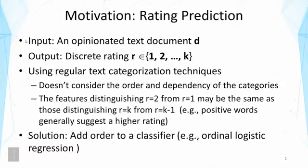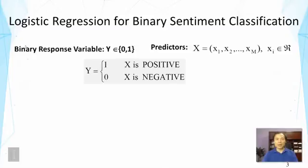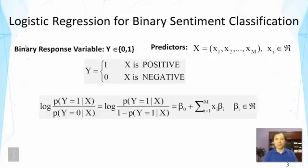Here we're going to talk about one approach called ordinal logistic regression. First, let's think about how we can use logistic regression for a binary sentiment categorization problem — suppose we just want to distinguish positive from negative. The predictors are represented as x with m features, each a real number representing a text document. The response variable y is binary: 1 means positive, 0 means negative.